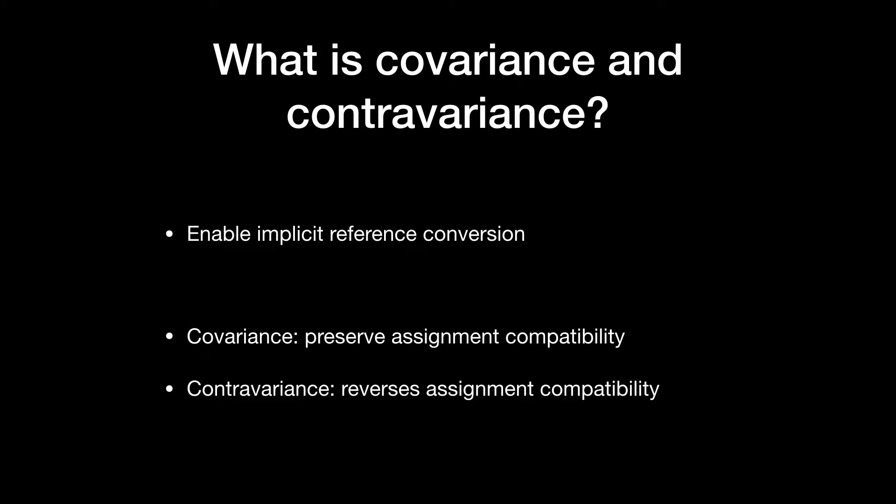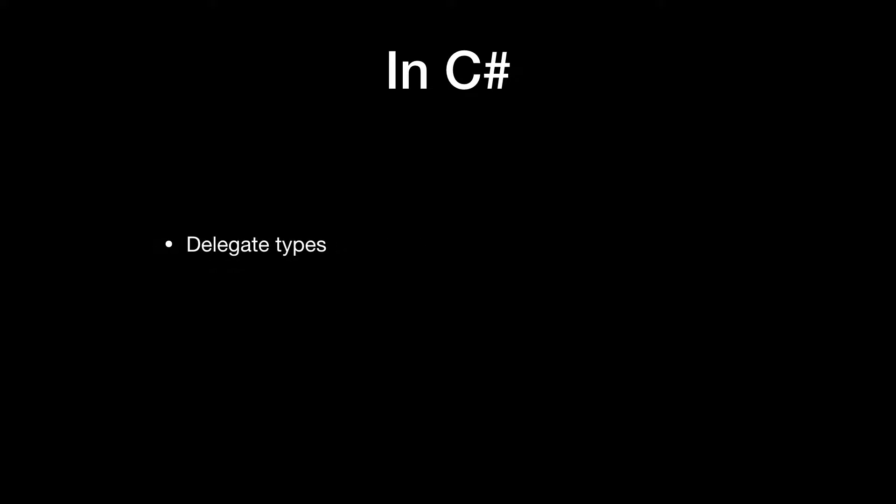In C#, covariance and contravariance enable implicit reference conversion. Covariance preserves assignment compatibility and contravariance reverses it. In C# we have three cases where covariance and contravariance play a role: when you work with delegate types, array types, and generic type arguments. Now this is still very high level, so let's jump into Visual Studio and write some code.